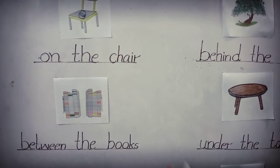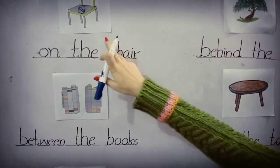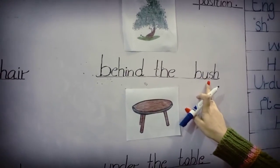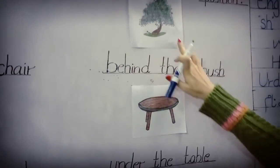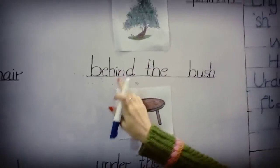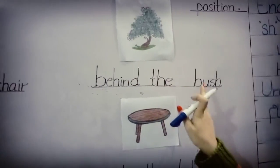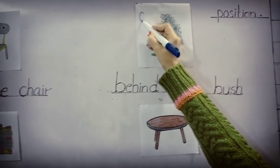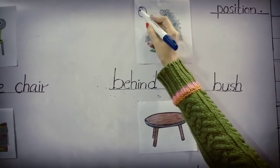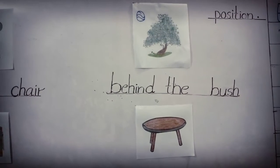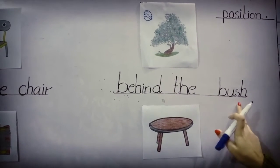This is called 'on the chair' — chair ke ooper. So the next is 'behind the bush.' Bush means jhaadi. Behind means side — bush ke side pe. Yaha pe aap ne ball draw karna hai. Behind the bush.